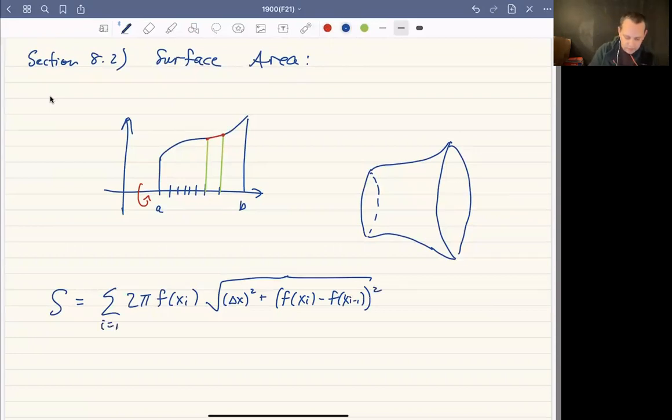And then we'll do the same trick. So we're going to let i go from 1 to n, and then I'm just going to write it compactly here, and we're going to take a limit. Okay, so very similar idea. We're just computing the area of the shell and then letting n go to infinity.